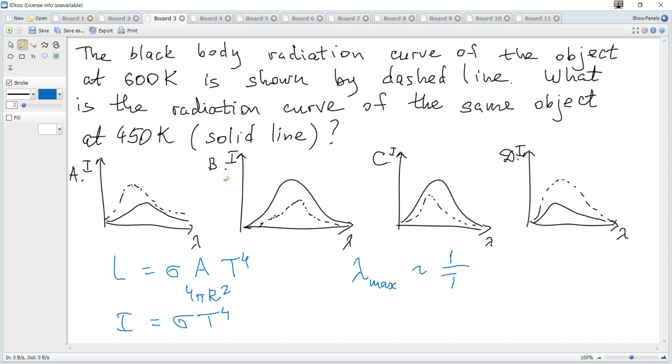If dashed is at 600 and solid is at 450, according to this formula, intensity for 450 must be smaller. So A is correct, B is not correct, and D is correct.